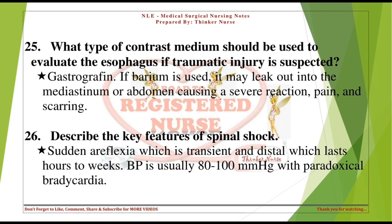Describe the key features of spinal shock: sudden areflexia which is transient and distal, lasting hours to weeks. BP is usually 80 to 100 mmHg with paradoxical bradycardia.